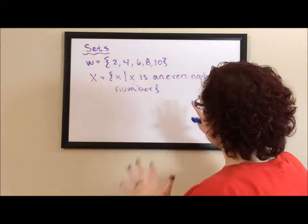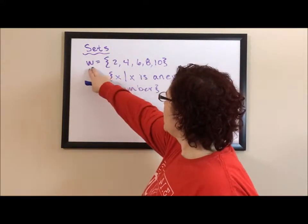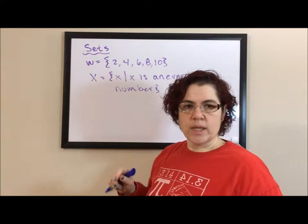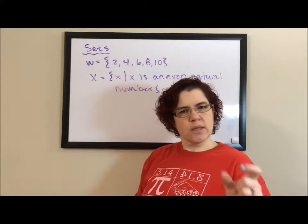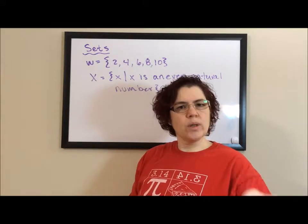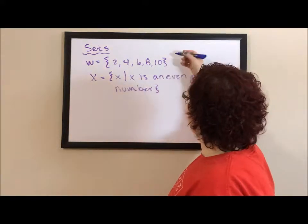If we look at the sets that I have here, they look different. Set W, I have five items in it, and I've listed out each of the elements. And that's the word that we use for the items in the set, the individual elements.